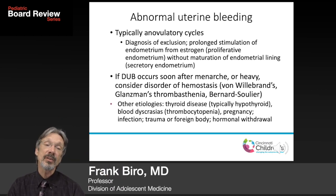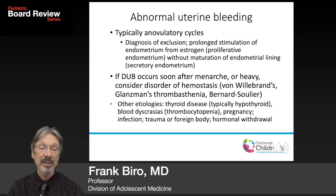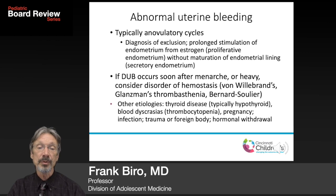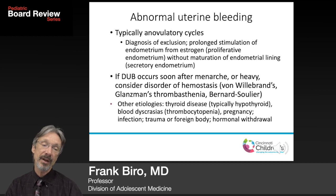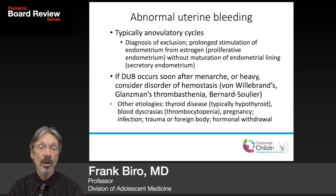If abnormal uterine bleeding occurs soon after menarche or is very heavy, consider disorders of hemostasis — specifically von Willebrand's disease, which commonly presents this way especially soon after menarche, Glanzmann's thrombasthenia, or Bernard-Soulier disease. Other etiologies include thyroid disease (typically hypothyroidism), thrombocytopenia, pregnancy, infection, trauma, foreign body (associated with malodorous vaginal discharge), or hormonal withdrawal.